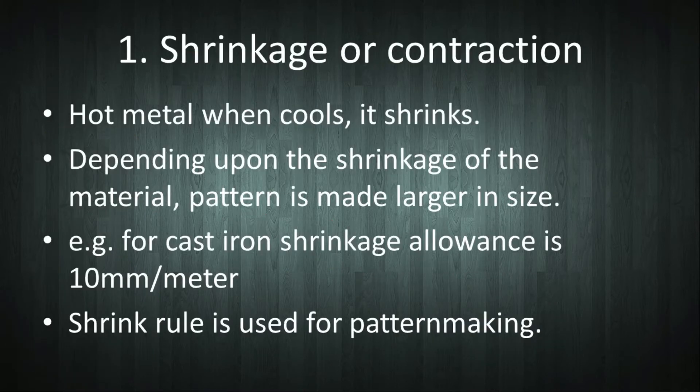The first allowance is shrinkage allowance, also called contractual allowance. When hot metal is poured in moulds, it cools, and when it cools, it shrinks or contracts in size. Hence, the pattern is made slightly larger in size depending upon the shrinkage of the material.